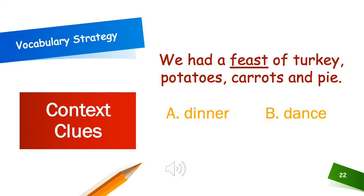Let's try this one. We had a feast of turkey, potatoes, carrots, and pie. Is it A dinner or B dance? We had a dinner of turkey, potatoes, carrots, and pie. Or we had a dance of turkey, potatoes, carrots, and pie. A. A is the correct answer. We had a feast or dinner of turkey, potatoes, carrots, and pie.